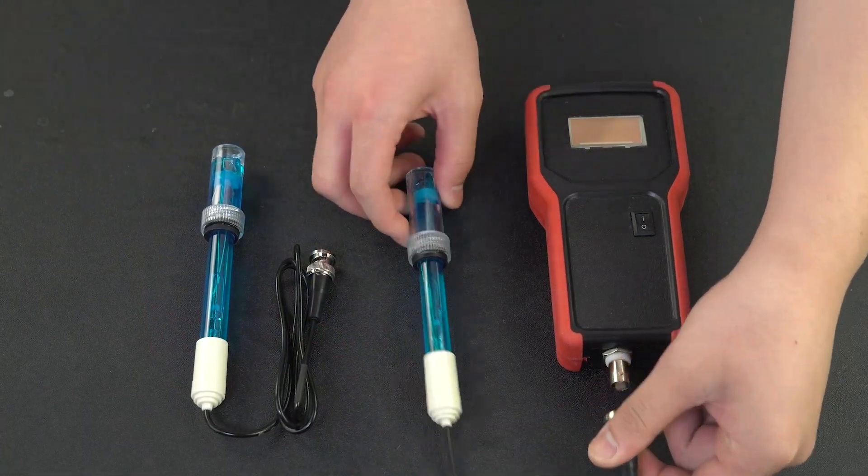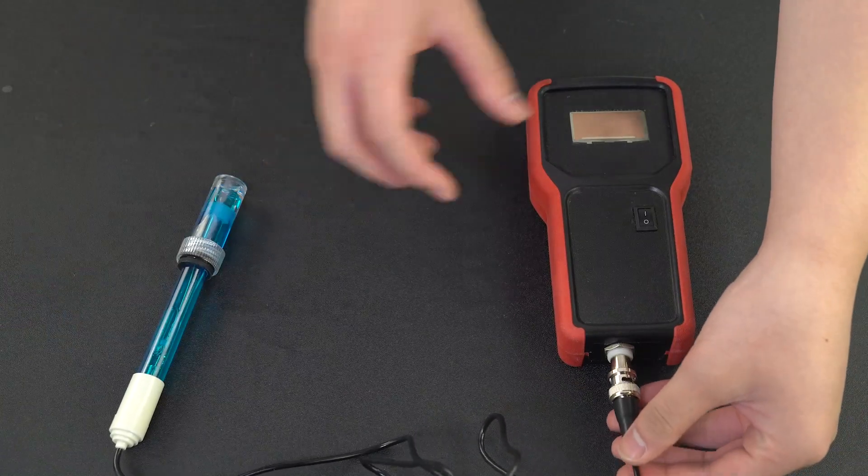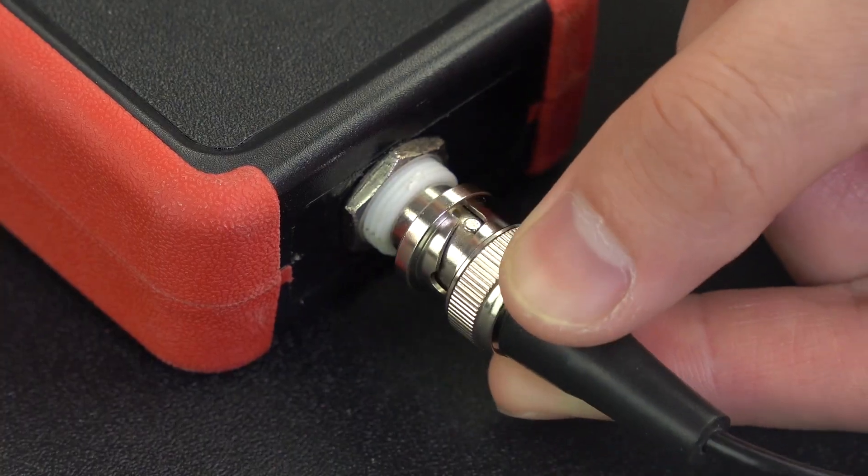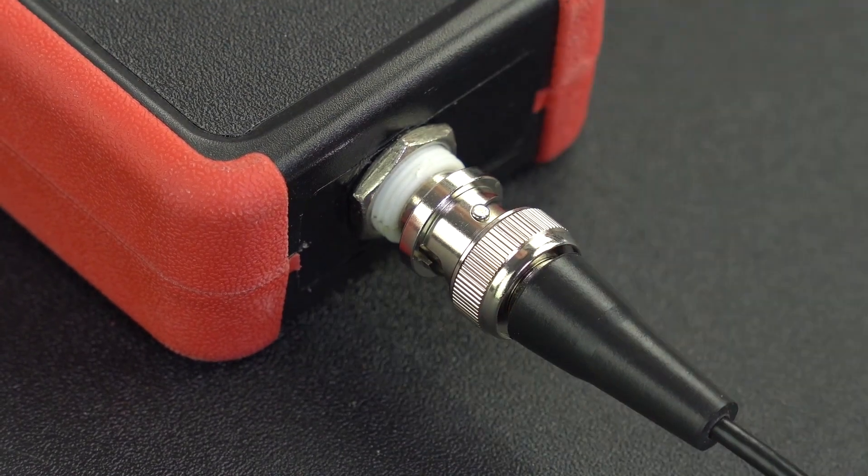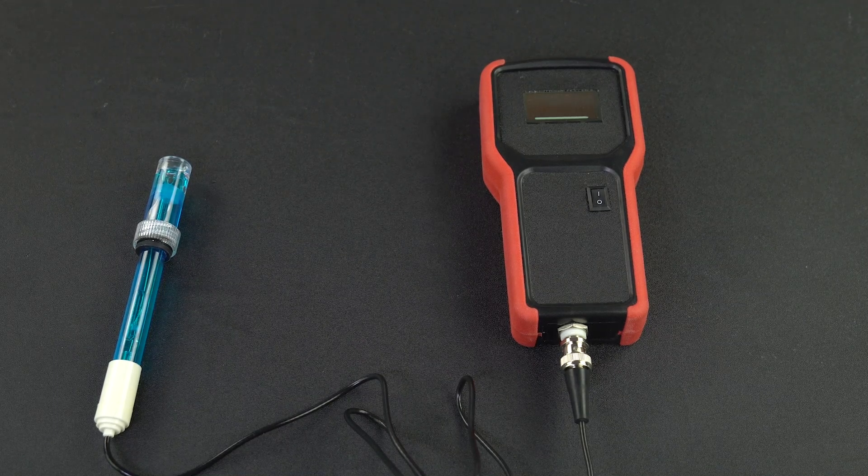So, how often do you need to replace electrodes? Well, according to our experience, it depends on your actual use conditions. Our laboratory electrodes are usually replaced after operating six months in the normal service condition.